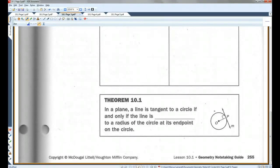In a plane, a line is tangent to a circle if and only if the line is perpendicular to a radius of the circle at its endpoints on the circle. So if you have a radius, and you have a tangent, and they intersect, they're going to be perpendicular. They're going to make a right angle. Always. You draw a better perpendicular symbol. Close enough.